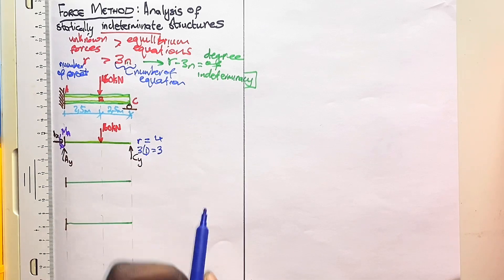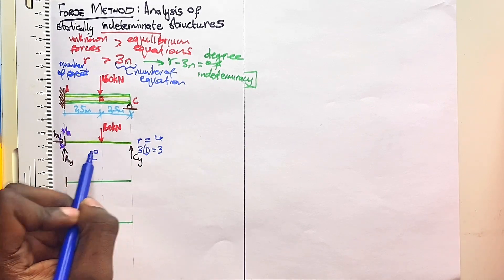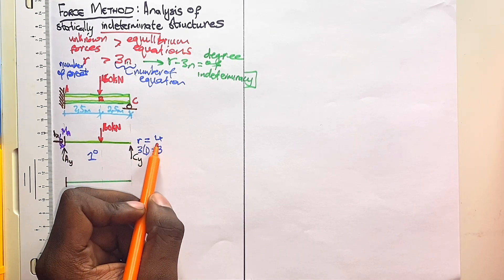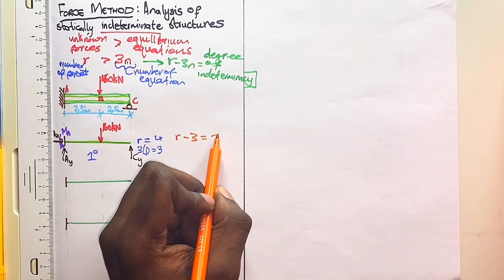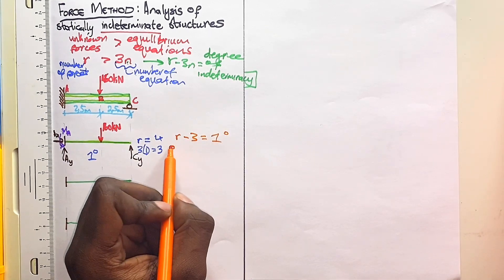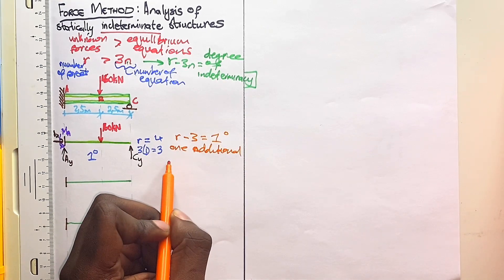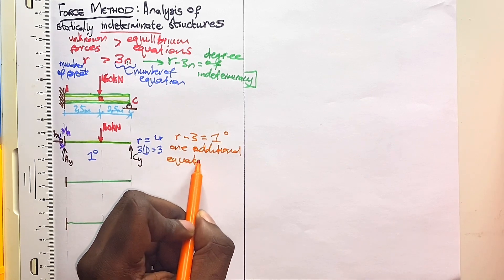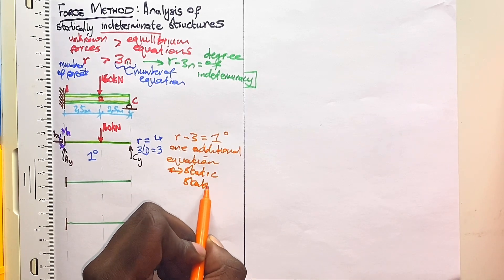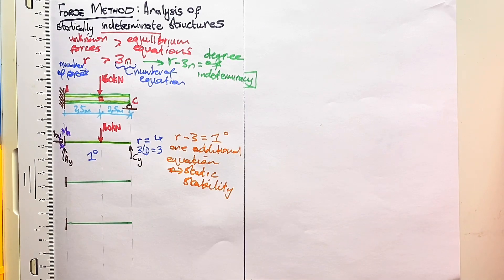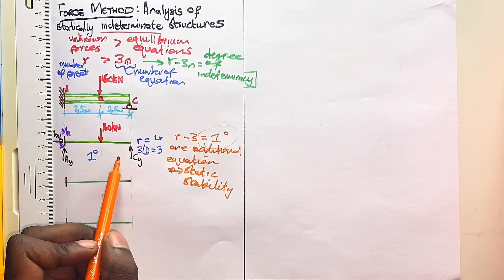The number of equations is three. Therefore four minus three means the structure is indeterminate to the first degree — r minus 3n equals one. This means one additional equation is necessary for static stability, so we need to find one extra equation.